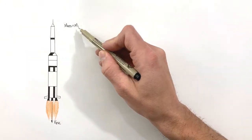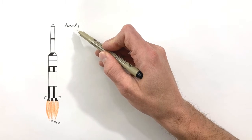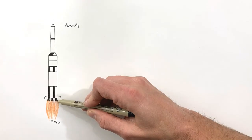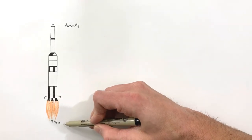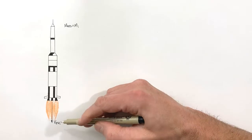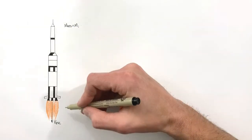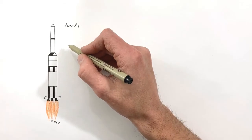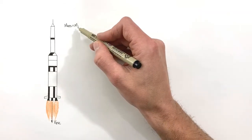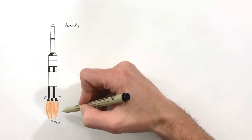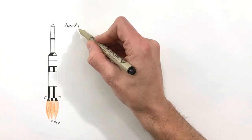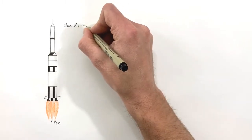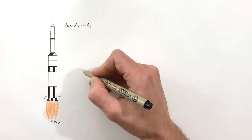We have an initial mass of this rocket, which we'll call Mi. Then we have the velocity at which fuel or propellant is coming out of the back end of the rocket, and we're going to call that V-escape, or V-ESC. The rocket starts with some mass M-initial and that is going to steadily decrease to some final mass, M-final.